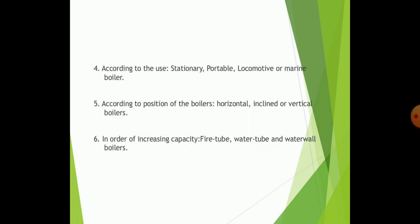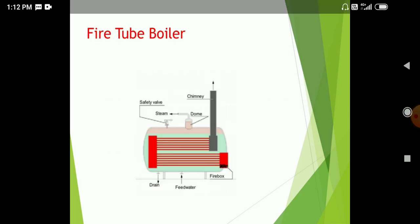Now, according to their use, boilers are classified as for the stationary, portable, locomotive boilers. According to position of boilers, the horizontal, incline and vertical boilers. And in order to increase the capacity, fire tube, water tube and water wall boilers are the some types of boilers.